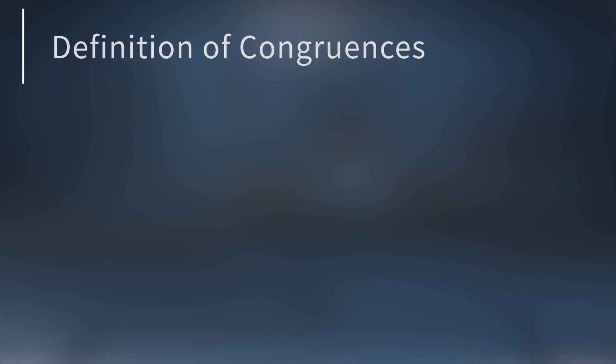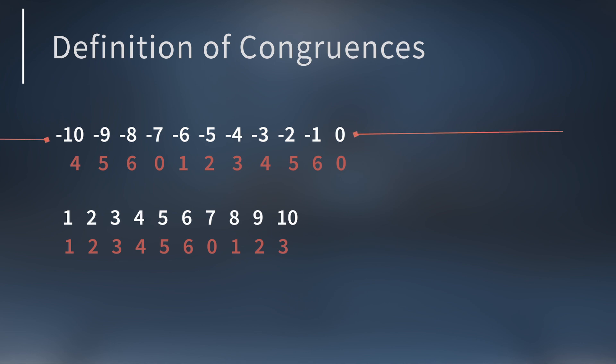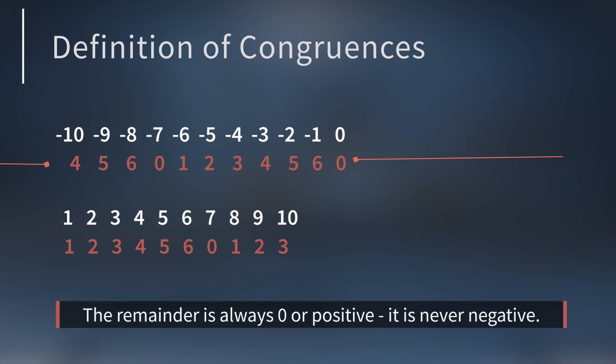To define congruences, let's explore divisibility by 7 in more detail. Here are a bunch of integers, both positive and negative. If you divide each integer by 7, you get a remainder between 0 and 6. Even when you divide a negative number by 7, you still get a remainder between 0 and 6.